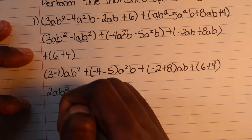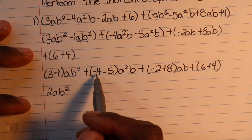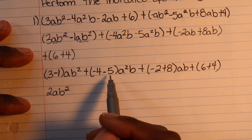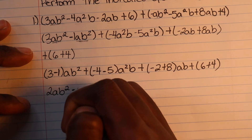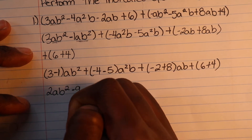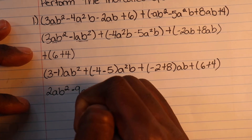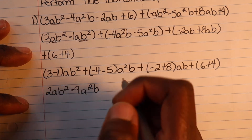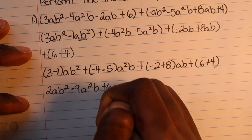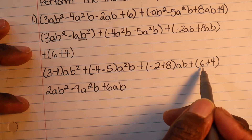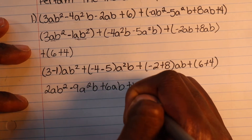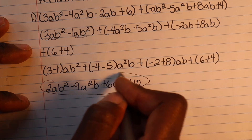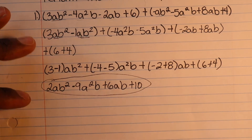So 3 minus 1 gives you 2·AB². Next, negative 4 minus 5 gives you negative 9 — look at the variable indicated there. Next is negative 2 plus 8, that's positive 6ab. And 6 plus 4 is 10. So that right there should be your final answer.